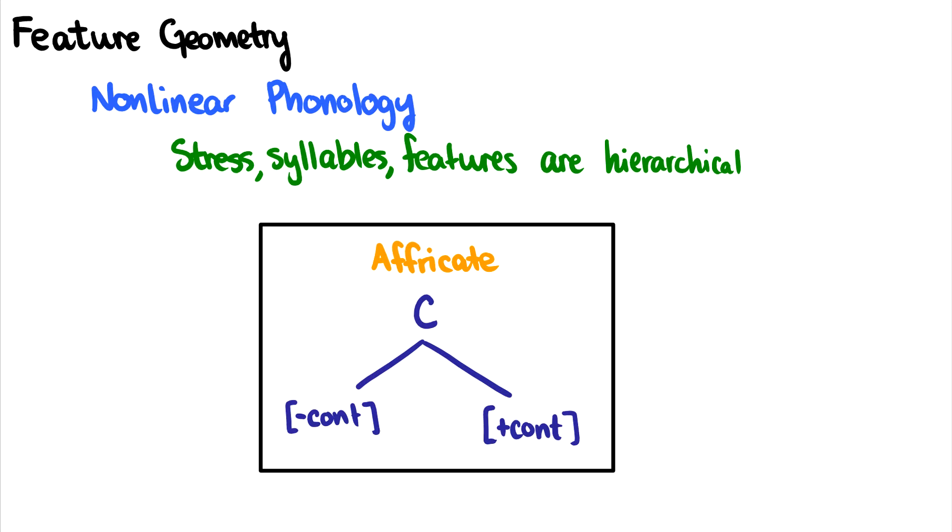And we can talk about things like affricates in terms of having these contradictory features. And what do I mean by contradictory features? Well, an affricate is really just a consonant that has a minus-continuant component, and then it's followed by a plus-continuant component. So like CH, for instance, the T is the minus-continuant, and the CH is the plus-continuant, and together it makes CH.